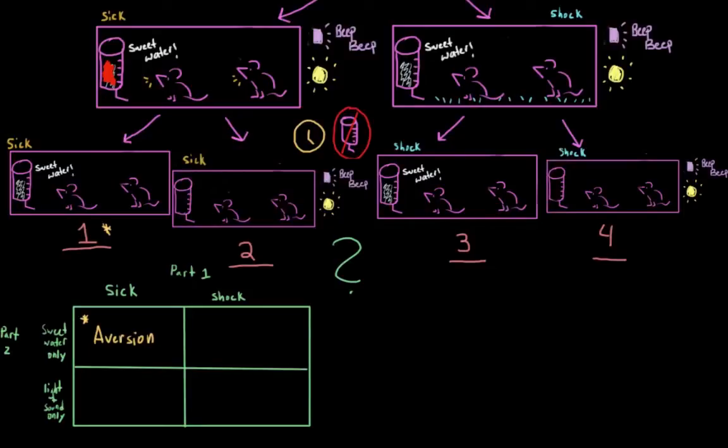All right, so we know that the rats made the connection that drinking sugar water made them sick, and so they didn't want to drink it the second time. But remember that that's not the only thing that happened. The rats also heard this tone beeping, and they also saw this light flashing. And so, of course, it's also possible that that led to them being ill. And that's what we're testing in the second group.